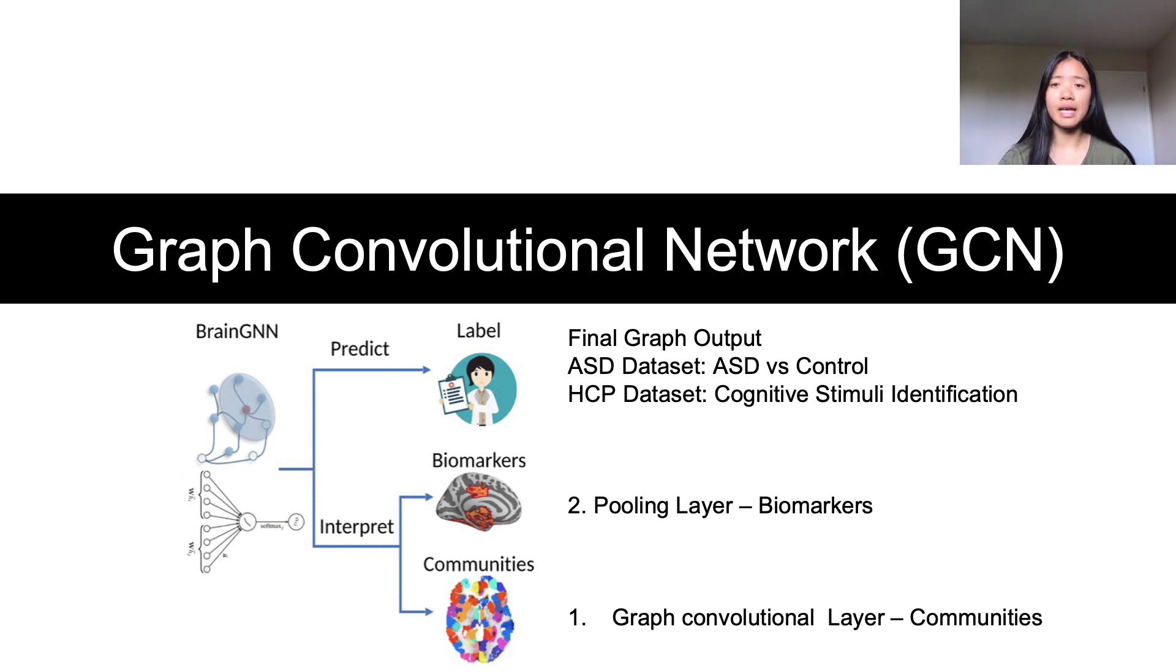For the autism spectrum dataset, the final label will identify if the fMRI image is of a healthy individual or an individual with autism spectrum disorder. For the HCP dataset, the final output will determine which of the seven cognitive tasks the subject was performing.